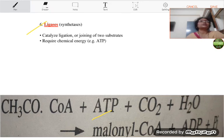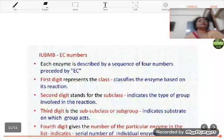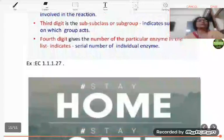So, here this reaction is because of the presence of acetyl coenzyme A carboxylase enzyme. So, these were the six classes of enzymes.